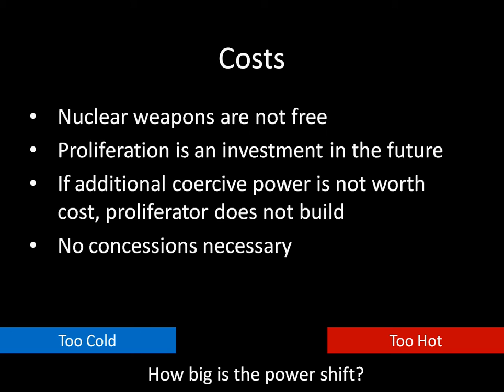That doesn't mean countries aren't going to want to develop nuclear weapons. You can think of proliferation as an investment in the future: you pay a cost now and don't get anything immediately, but in the future you'll have additional coercive power. But if that additional coercive power is relatively small compared to the cost of building those weapons, you can't even credibly threaten to develop them—they're simply not worth the cost. An opponent therefore has no reason to offer concessions to convince such a state not to develop a weapon. This is the too-cold situation: the power shift is too small relative to the cost.